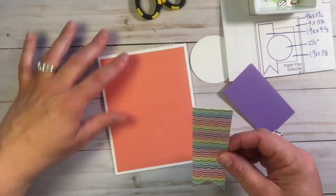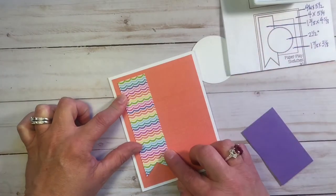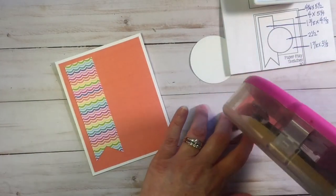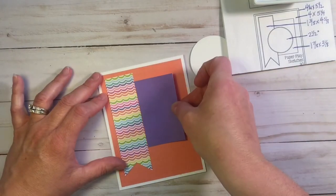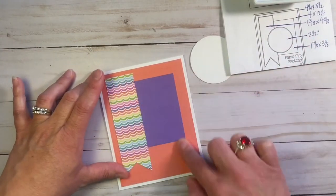And I'm just using my ATG gun to tape them down. I'm just showing how to follow the sketch, that the borders are a little bit tinier on that upper corner and left side than they are on the right side and the right corner.